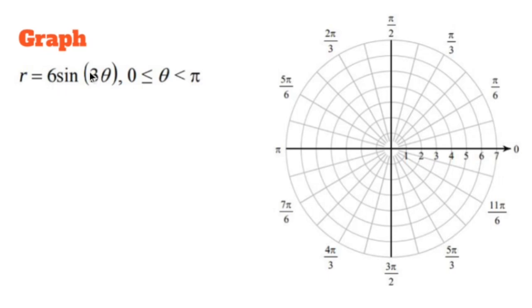Graph r equals 6 sine 3 theta, where theta is in between 0 and pi. Polar graphs are gorgeous. They're the most beautiful graphs that you see in math.